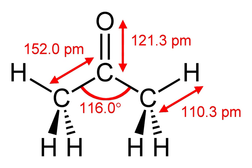Millions of kilograms of acetone are consumed in the production of the solvents methyl isobutyl alcohol and methyl isobutyl ketone. These products arise via an initial aldol condensation to give diacetone alcohol. Condensation with acetylene gives 2-methylbut-3-yn-2-ol, a precursor to synthetic terpenes and terpenoids.